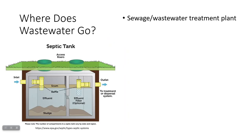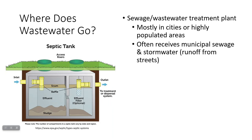Where does your wastewater go? If you are in a city or a highly populated area, it's probably going to go to a sewage treatment plant. These can sometimes receive both municipal sewage — the water draining from people's homes and businesses — and a mix of stormwater, which is runoff from streets, which contains different things than what's carried from homes and businesses.